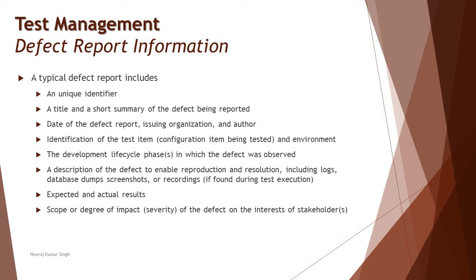Include expected and actual results — stating what the behavior should be per the requirement versus how it is actually behaving — giving a developer a quick comparison to understand the defect. Also capture the scope and degree of impact, which is the severity, defined by the test engineer to determine the impact of the defect on functionality and the user. Severity levels vary by organization: some use S1, S2, S3; others use high, medium, low; or critical, major, minor.